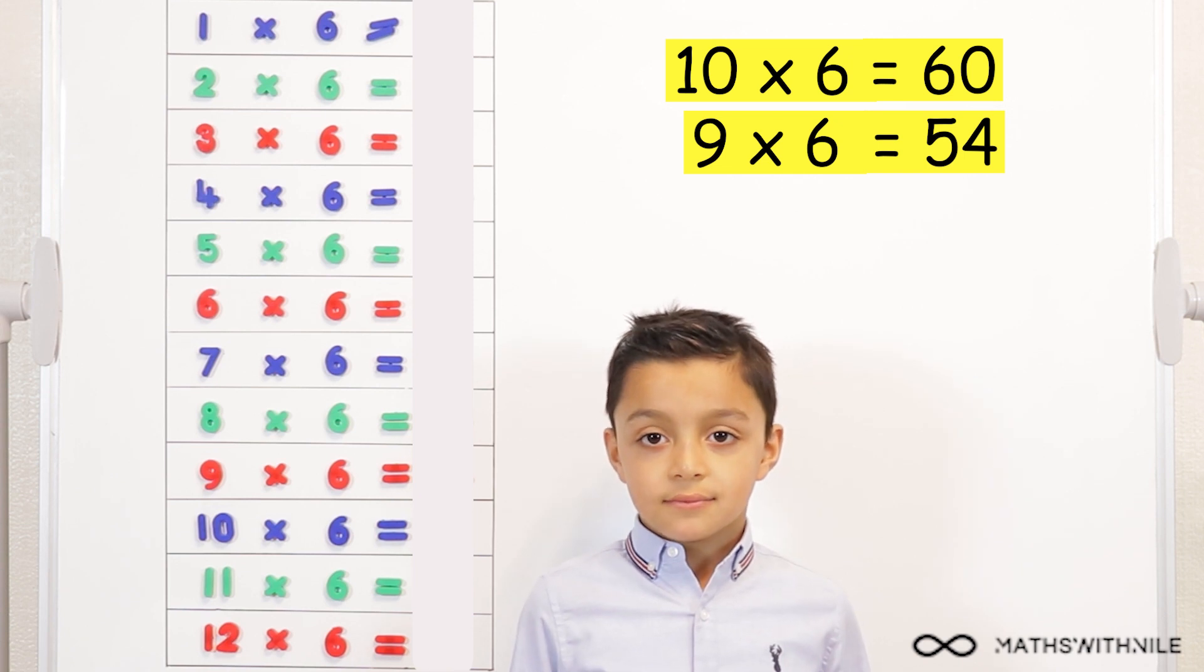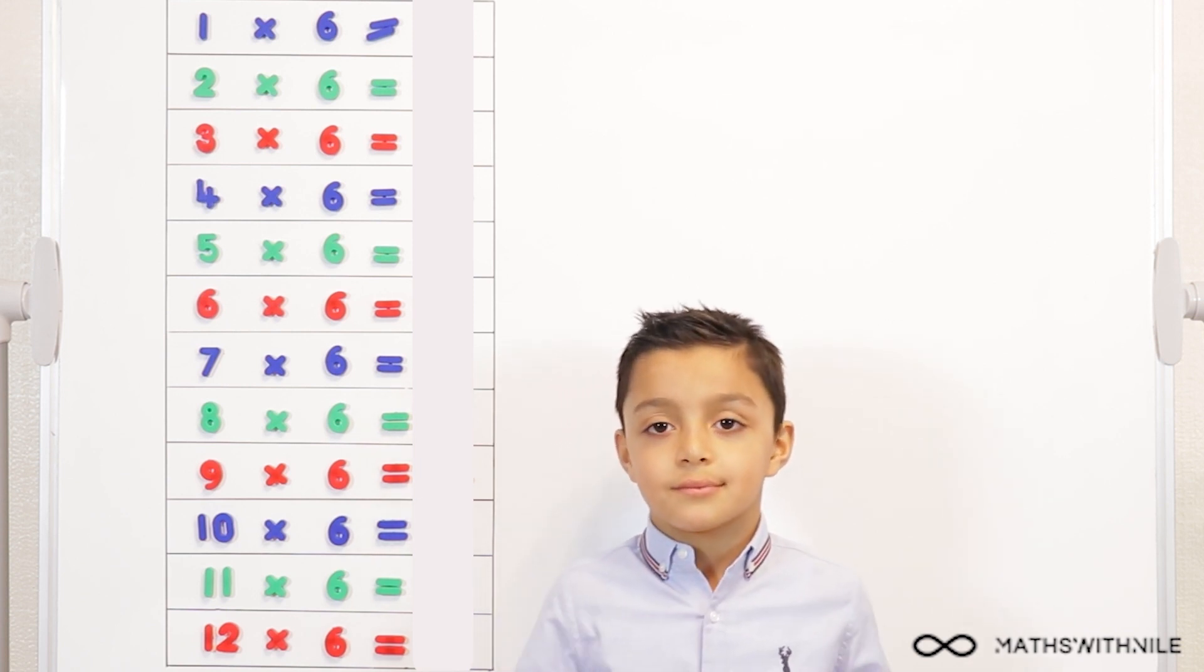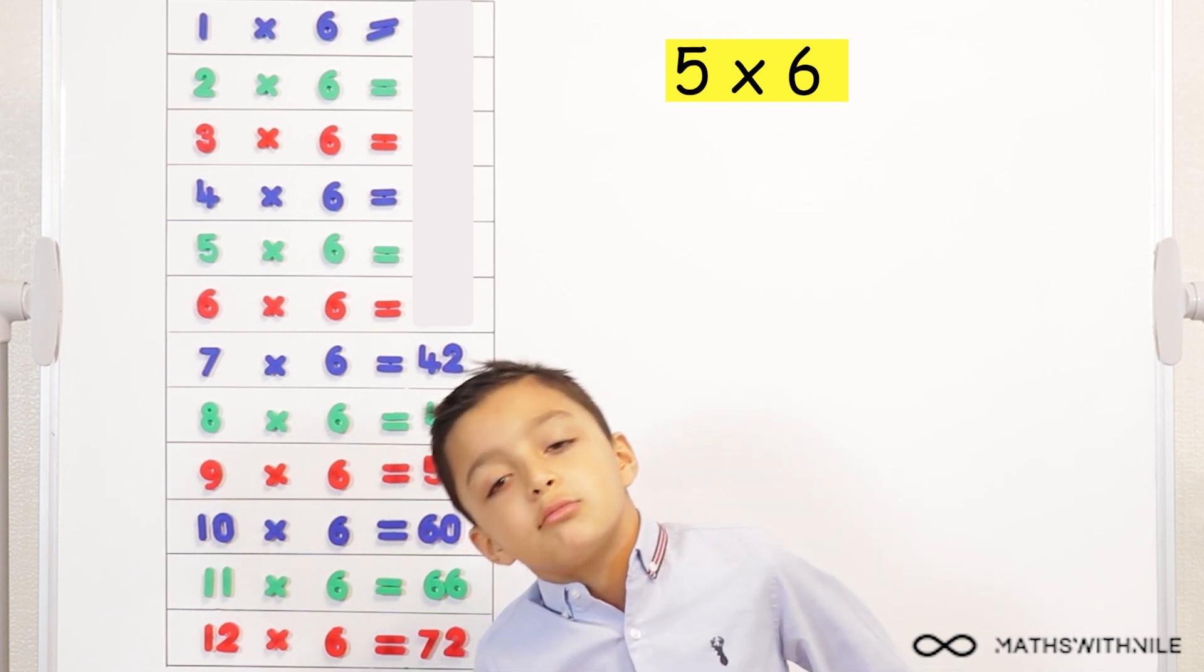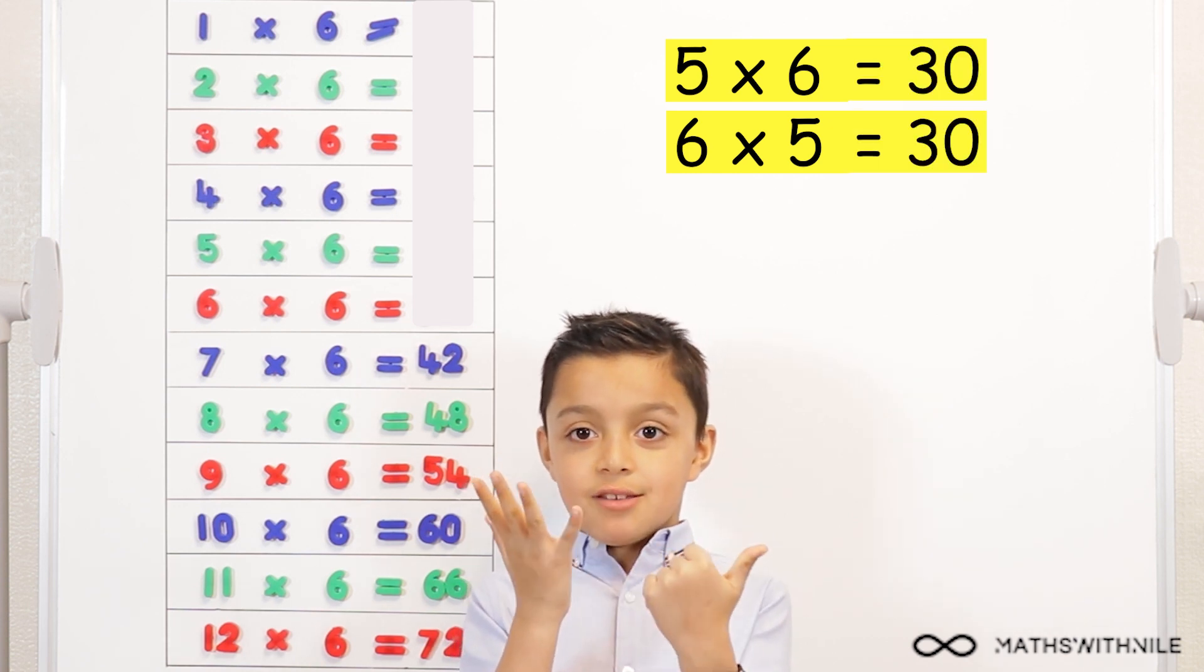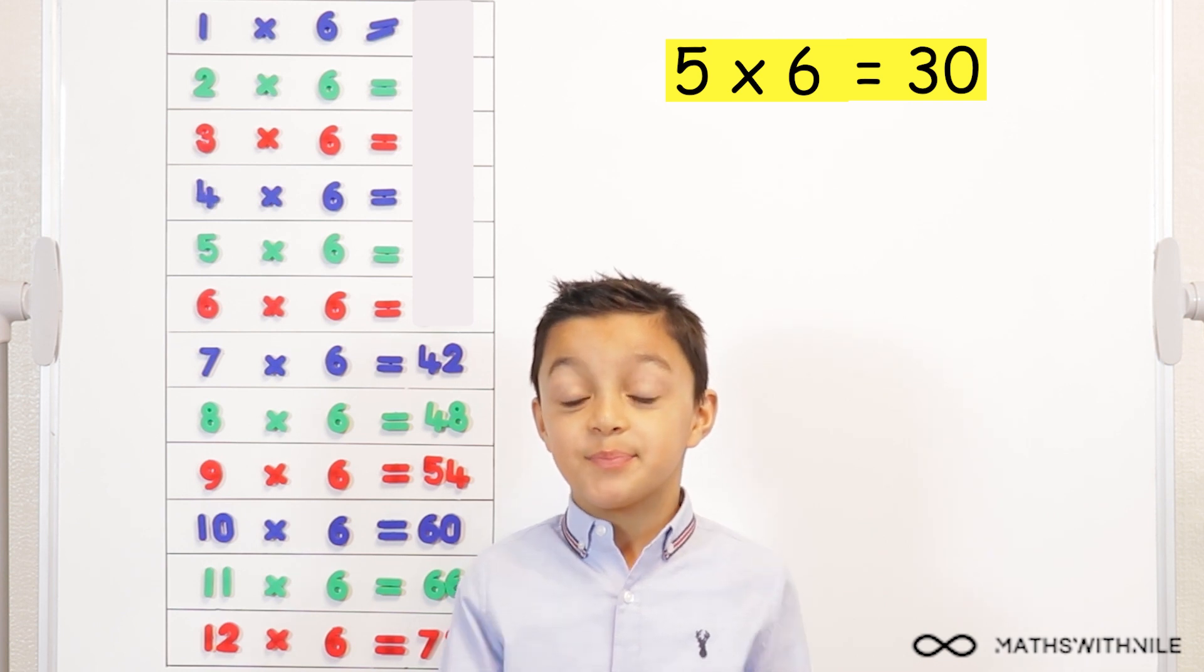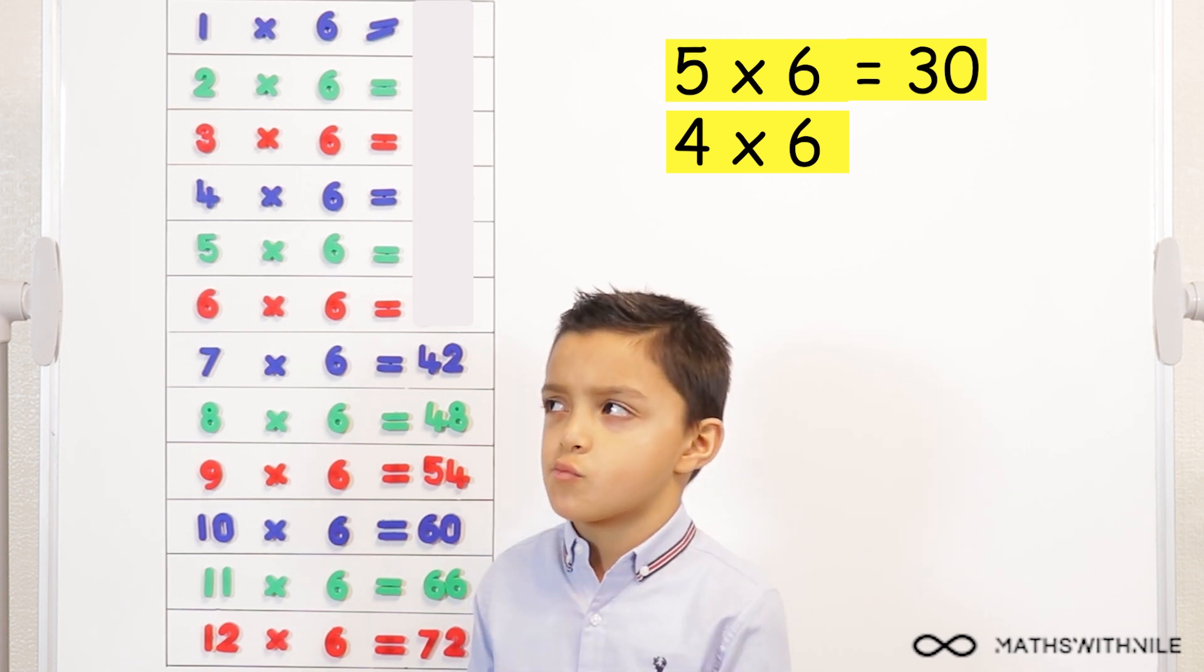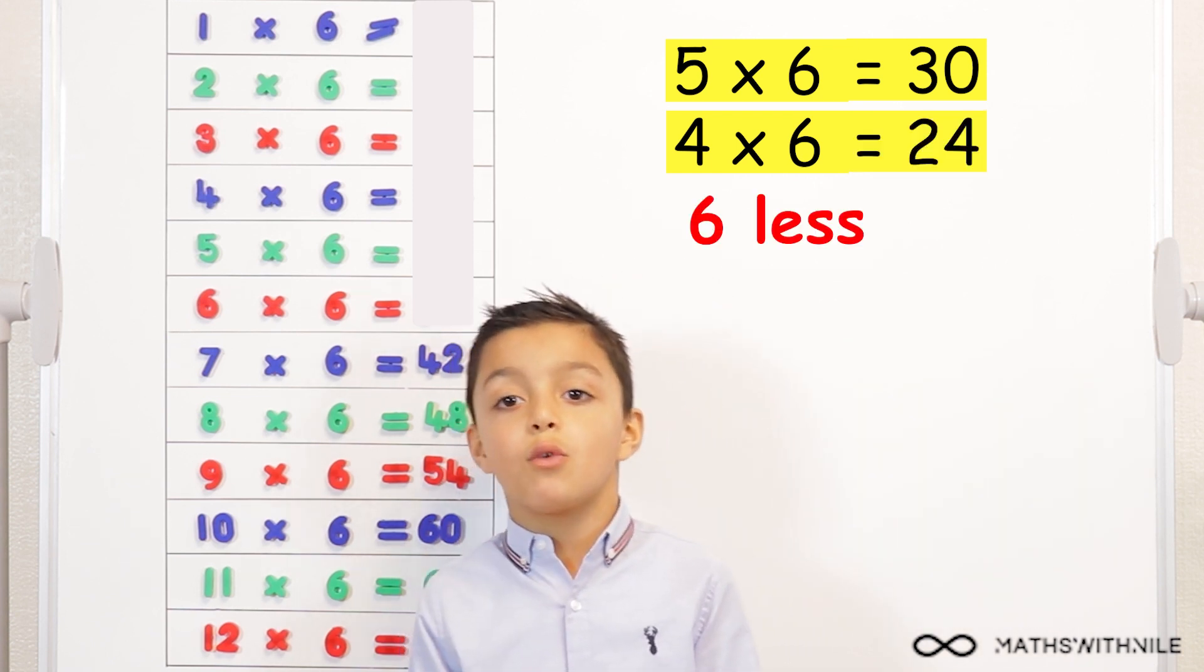So, instead of, when you worked out ten times six equals sixty, to work out nine times six, you just took six away. Yeah. And you got fifty-four. Brilliant. Okay, so what is the answer to five times six? Don't look at the board, and I want you to think commutative. What is the answer to five times six? Six times five. Five, ten, fifteen, twenty, twenty-five, thirty. Okay, so if five times six is thirty, what is six times six? Thirty-six. And if five times six is thirty, what is four times six? What are you going to do with the thirty? Um, take away six, so twenty-four. Excellent.